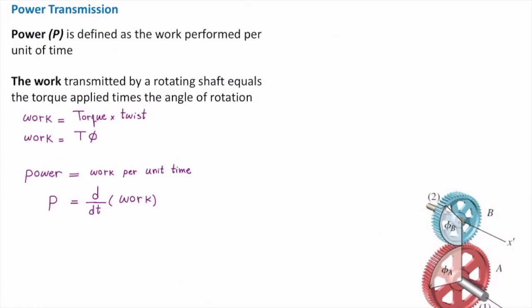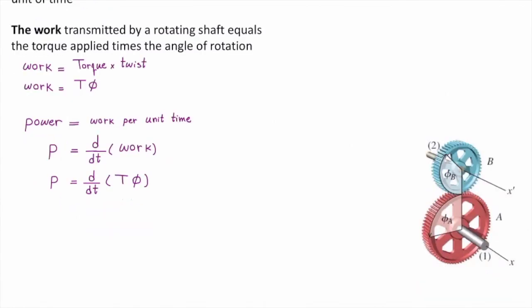So I can simply derive work with respect to time and determine how much is the power. To do that, let me plug work into this equation. That gives me d over dt times T phi. Torque would be constant over time, so I will take out T and just derive phi with respect to time. And that would be power is equal to torque times d phi over dt. I simplify this into this equation: power is torque times angular velocity, or omega. And omega, or angular velocity, is d phi over dt.